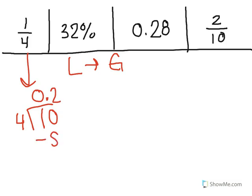2 times 4 is 8. I'm going to bring down a 0. And 4 goes into 20 five times with none left over, because 20 minus 20 is 0. So 1/4 is equal to 25 hundredths, 0.25.